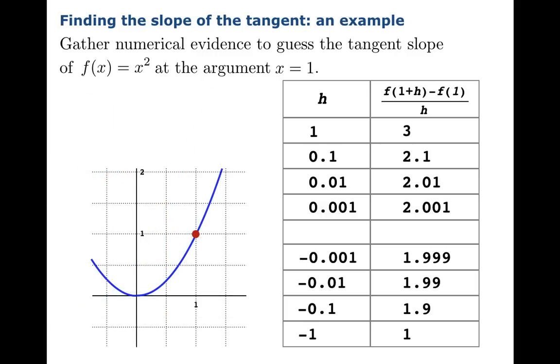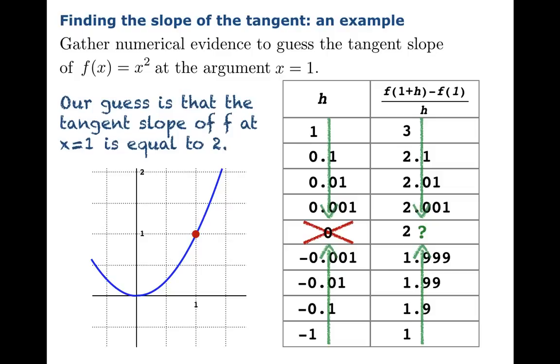Now you'd like to just plug in 0 for h, conceptually. But you can't because you get 0 in the denominator. So you've got to rule that out. What are we left with? We can let h approach 0. We can't equal 0, but we can approach 0. Meanwhile, we can look at what's happening to these secant slopes. It's pretty compelling in this table that these values seem to be approaching 2. That seems to be the missing number. So we'll guess that the tangent slope of f at 1 is actually equal to 2.